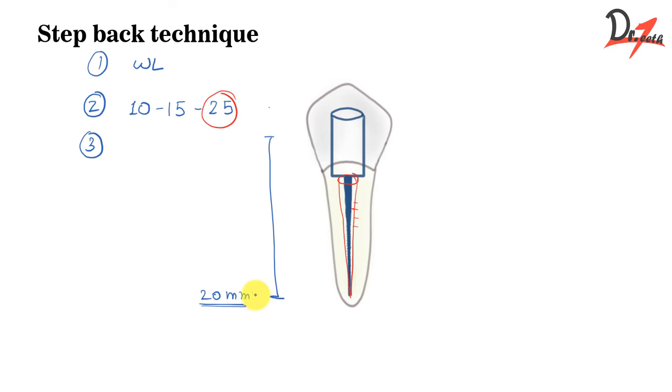Now in step back, what we will do, we have to go backward, right? So we will decrease the working length, but the file size will increase as usual. So next we take number 30 and we go till 19 mm only. Then we take 35 and we go 18 mm. We take 40 and we go 17 mm.